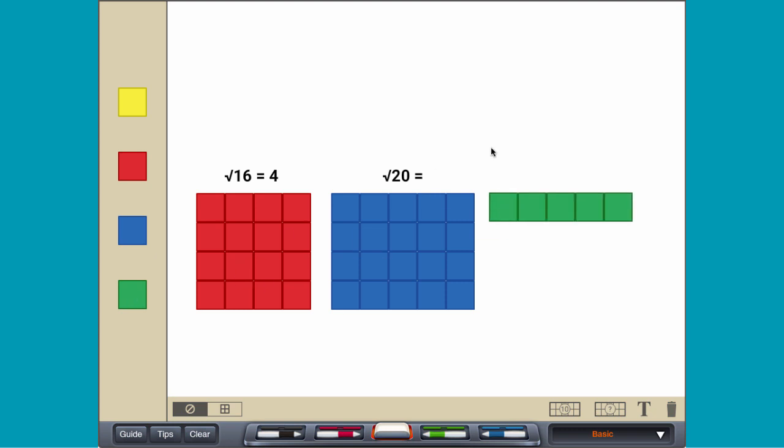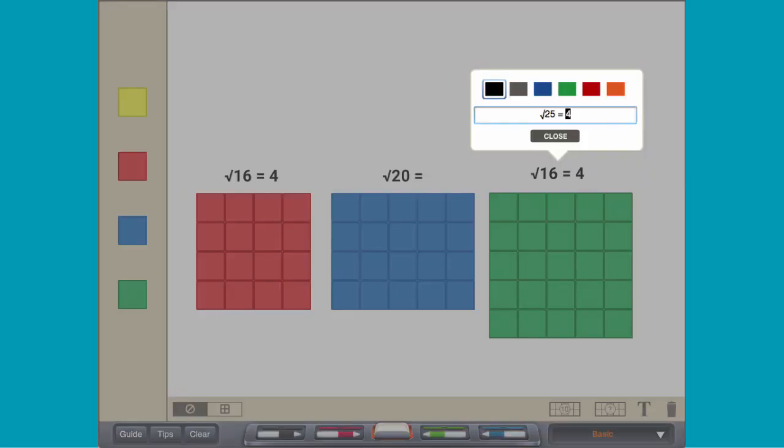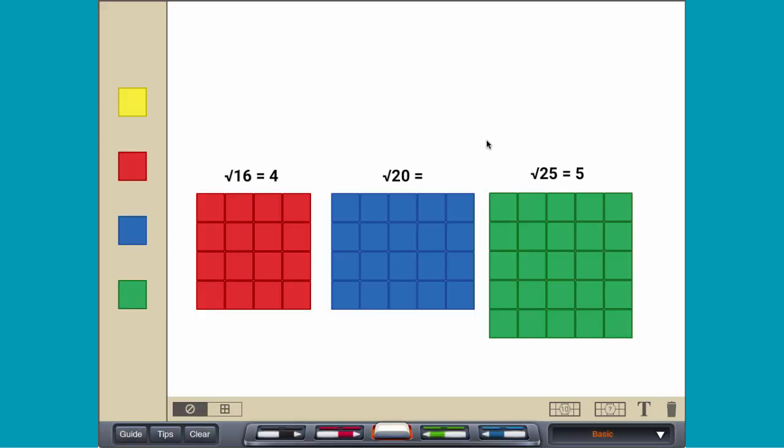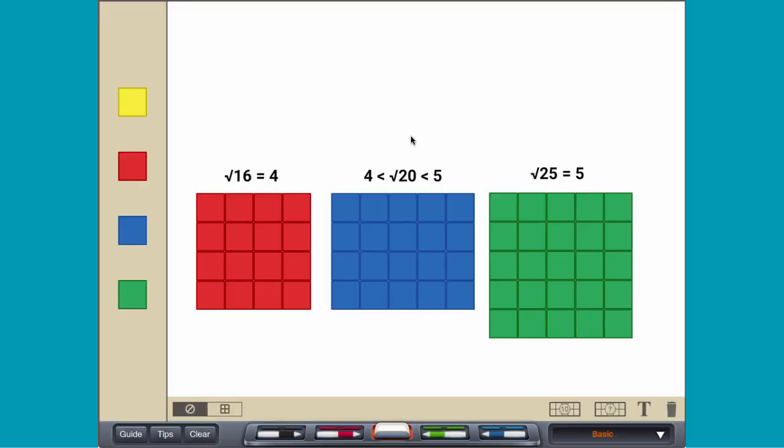Because 20 makes a square greater than 4 by 4, but smaller than 5 by 5, the square root of 20 can be estimated as a number between 4 and 5.